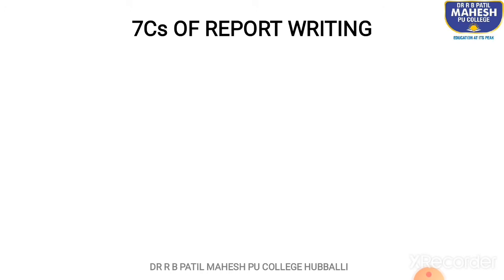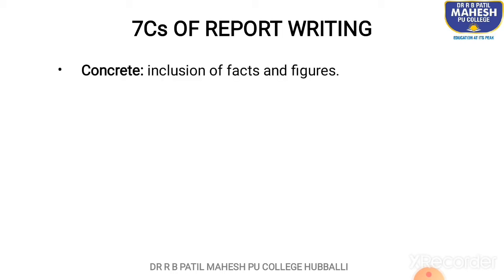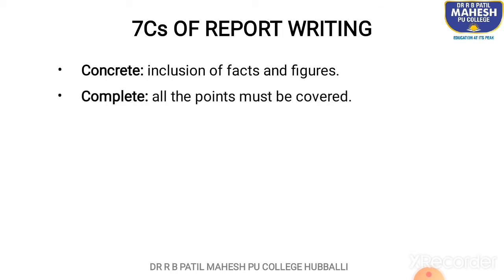There are seven C's of report writing — important points you should remember when you write a report. The first is concrete: a report is always factual and verified, so it has to include all the facts and figures that the graph or chart represents. The second C is complete: all the points must be covered. Whatever is presented in the data, graph, or chart, you have to cover all the points clearly.